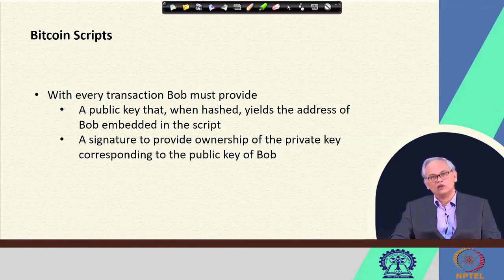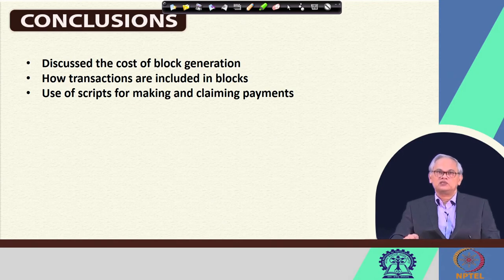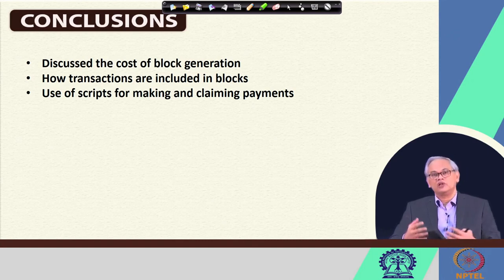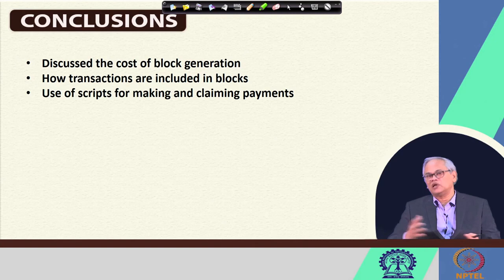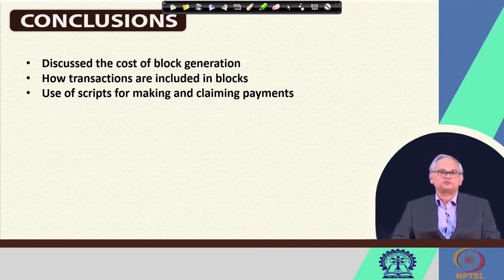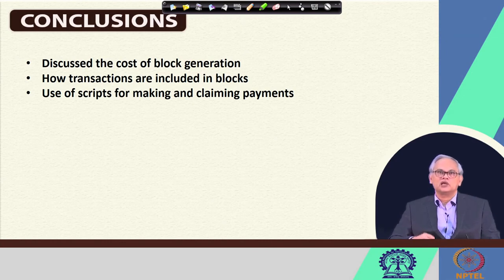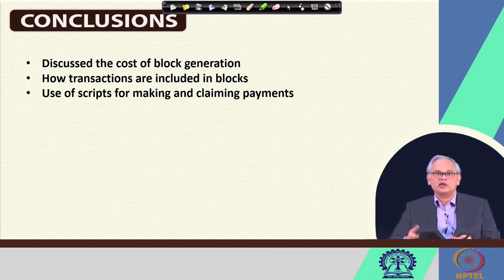To conclude today's lecture: we discussed the cost of block generation and found that it requires a huge amount of computational power, much of which is wasted — a concern related to what is called proof of work, the foundational principle of the Bitcoin blockchain. We also saw how transactions are included in blocks, and finally how scripts are used for making and claiming payments.